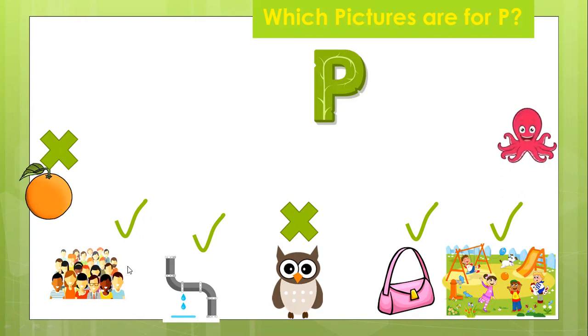Next. Is P for octopus? No way. Octopus is the letter O, not P.